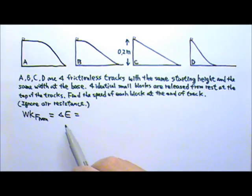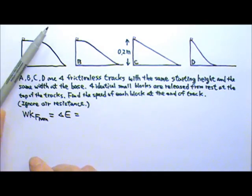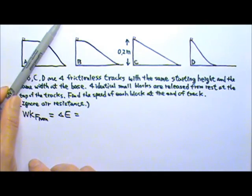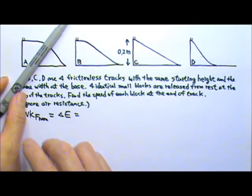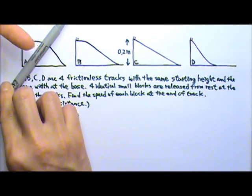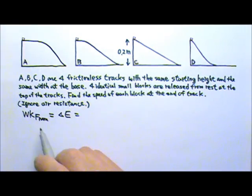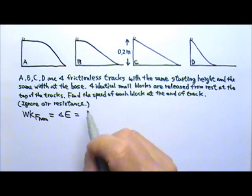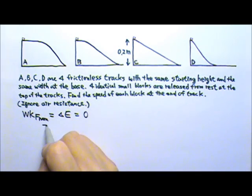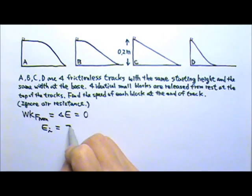Just like the tension in the Tarzan problem, the normal force does not do any work because the normal force at every moment is perpendicular to the displacement. The work done by non-conservative forces is zero, so the initial mechanical energy equals the final mechanical energy.